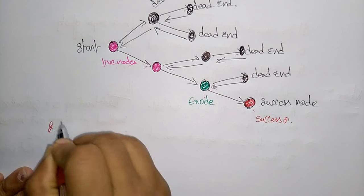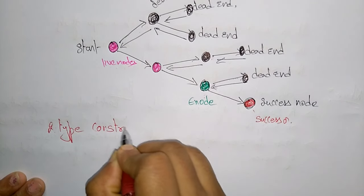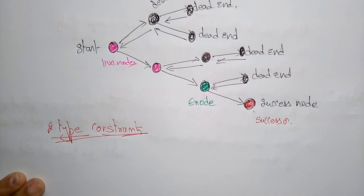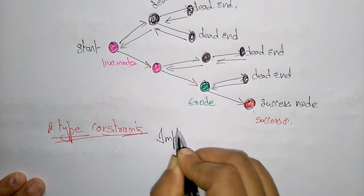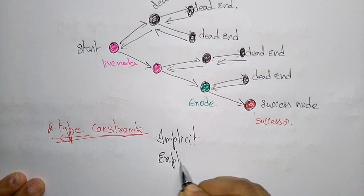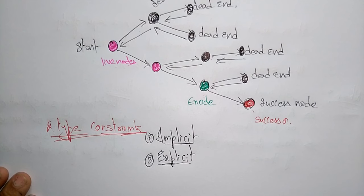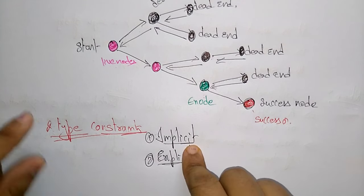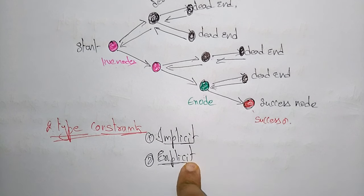Two types of constraints are present in backtracking: implicit constraints and explicit constraints. An implicit constraint is a rule that specifies how each element in a tuple should be related, whereas an explicit constraint is a rule that restricts each element to be chosen from a given set.